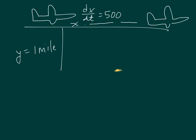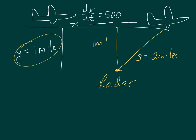So this is the radar. This distance here, let's call it s, is two miles. The altitude is one mile. We don't know what x is yet.